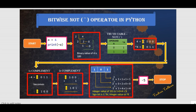When I do a NOT operation on this 4, it is just going to reverse the bits. Meaning 0 will be converted to 1, the next 0 will be converted to 1, and 1 will be converted to 0. The sign bit 0 will be converted to 1, meaning the positive sign will be converted to a negative sign. The moment we encounter a negative value — if the sign bit changes to 1 — we need to represent it in 2's complement form.